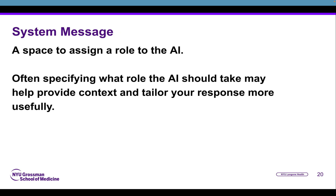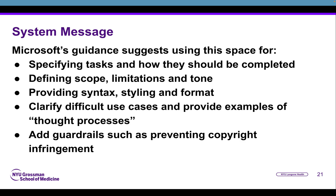The system message is space to assign a role to the AI. It can be useful to specify that role to provide context and tailor responses. You can create a general role and set of instructions that you continuously add new data to, and the AI will refer to its role and act accordingly — this can be easier than typing out the full prompt each time. Microsoft suggests use cases such as: specifying tasks and how they should be completed, defining scope, limitations, and tone, providing syntax, styling, and format, clarifying difficult use cases with examples, and adding guardrails such as preventing copyright infringement.